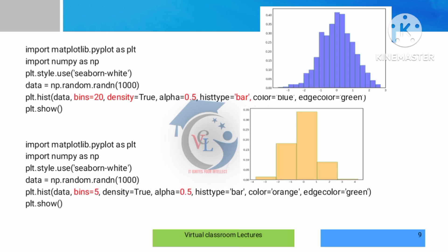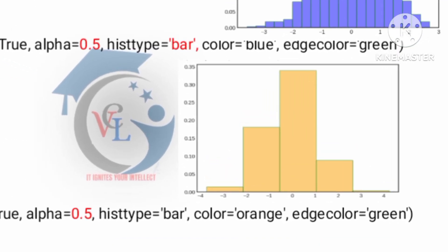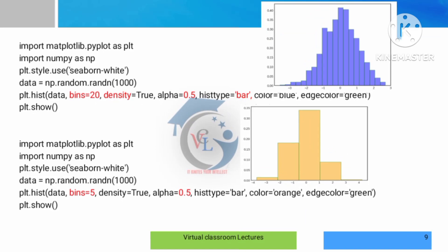In this histogram, we can make changes — for example, setting bins=25, density=True, alpha=0.5 or 0.7 to adjust the transparency level. The histtype can be 'step', 'filled', or 'bar', with line and edge color set to green. With bins=5 and alpha values, we can set the color to orange with an outer edge line in green, showing different histogram types.